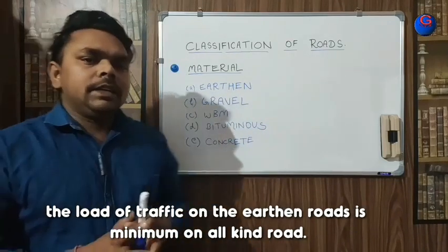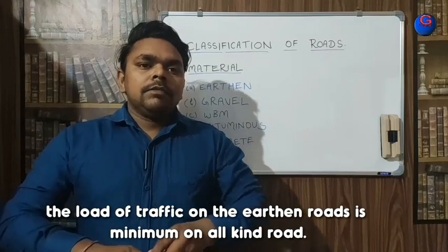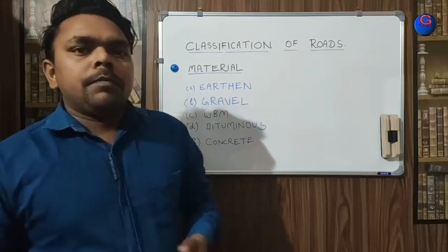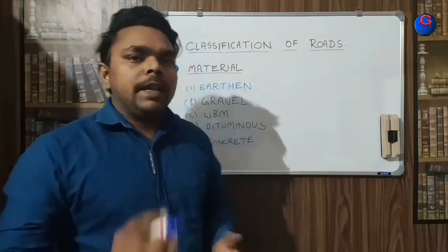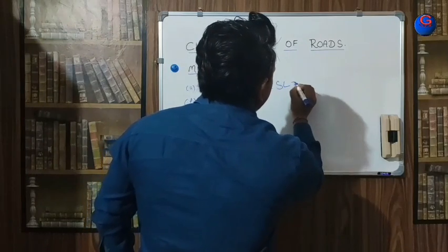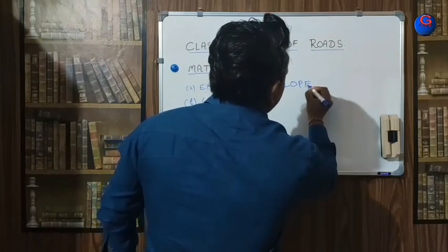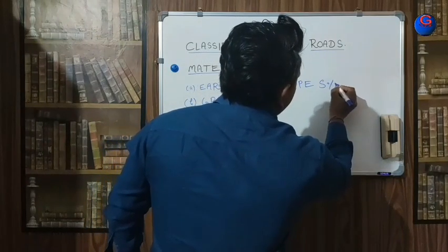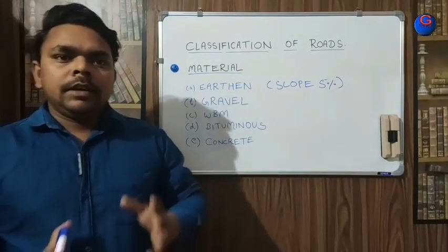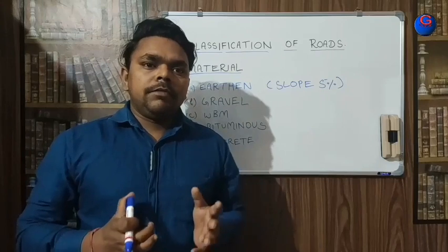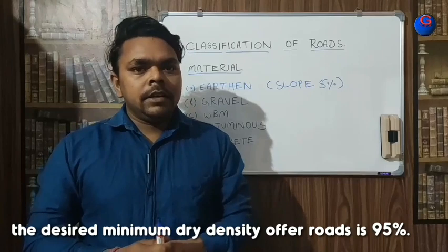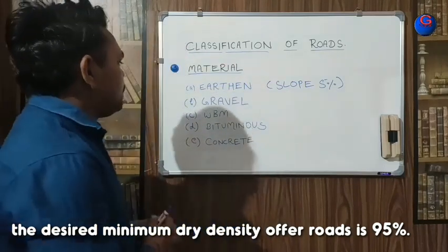One thing we should keep in mind while making earthen roads: the cross slope should be at least five percent. Sufficient water drainage must be ensured in earthen roads, otherwise they will not withstand traffic over time.